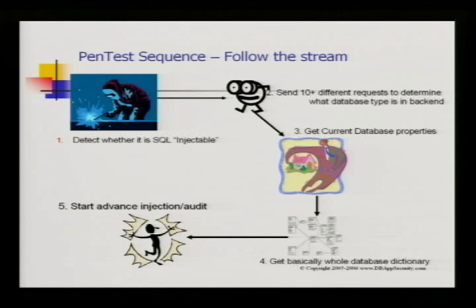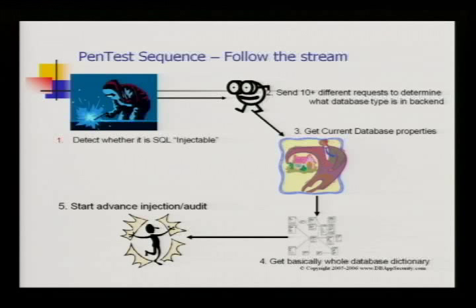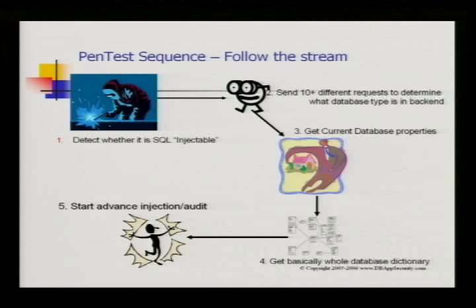First, just like a normal scanner, it detects if the target is SQL injectable — but that's far less than enough. Then, just as Nmap sends tens of packets to detect OS types based on TTL and window size, Matrix sends tens of different requests to determine the database type in the back-end and the version. Then it gets current database properties: what web user is connected, the instance name, and version.